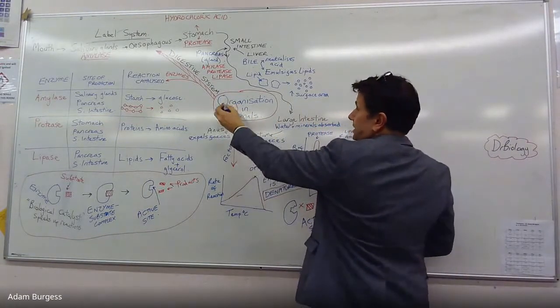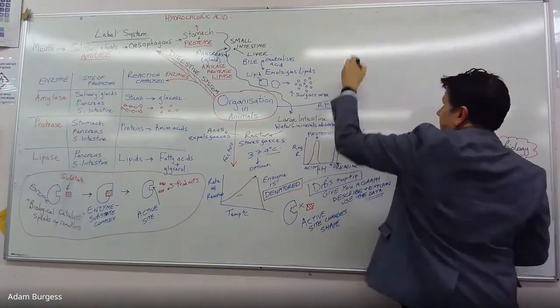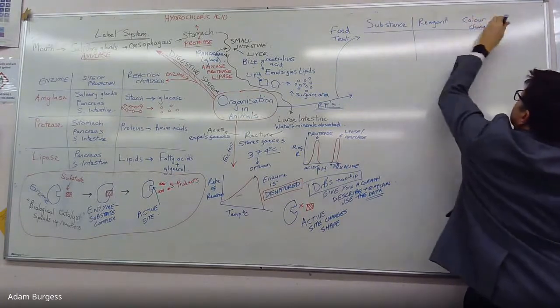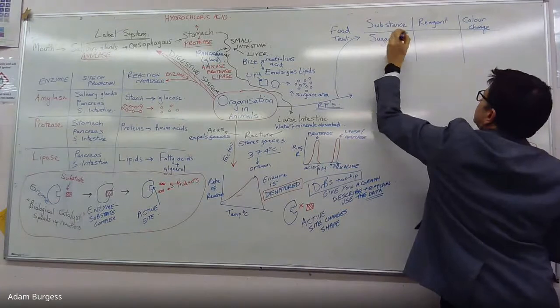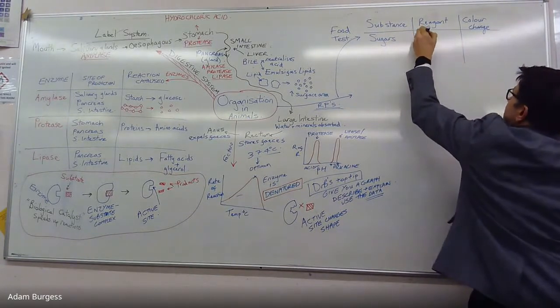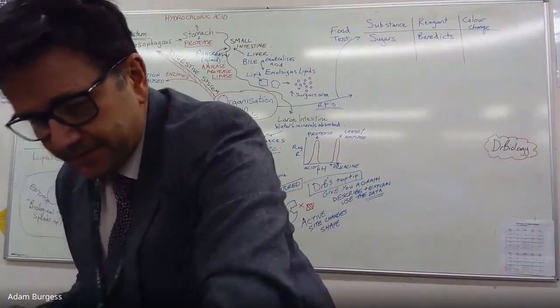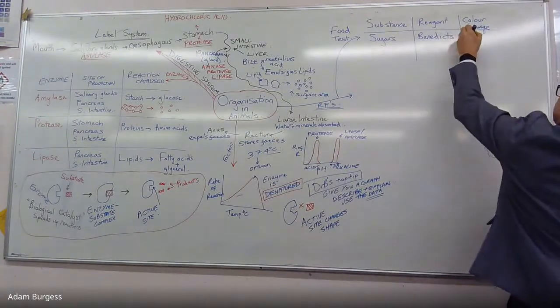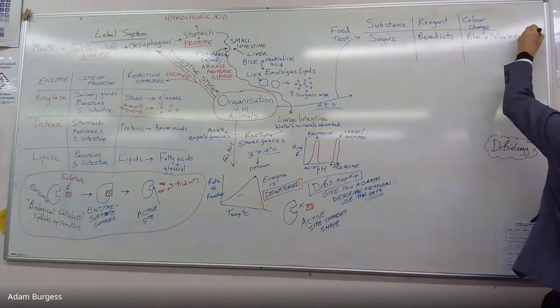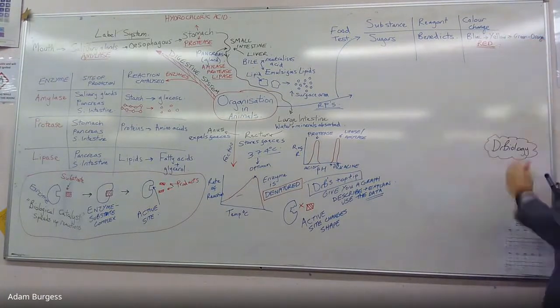There are two required practicals here. The first is food tests. For sugars, can anyone remember what reagent is used? Benedict's. Benedict's solution or reagent goes blue, then through yellow, green, orange, but the main one is red or brick red if sugars are present. What do you have to do to Benedict's to get the reaction to occur? You heat it at 80 degrees, probably in a water bath.